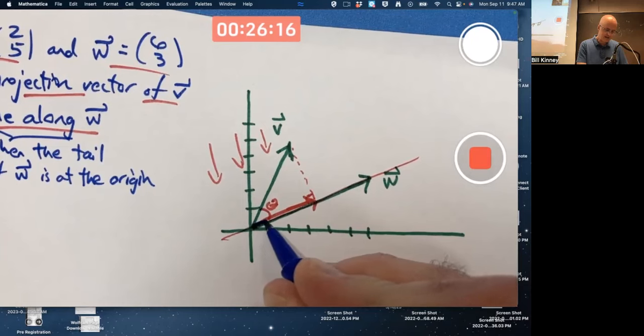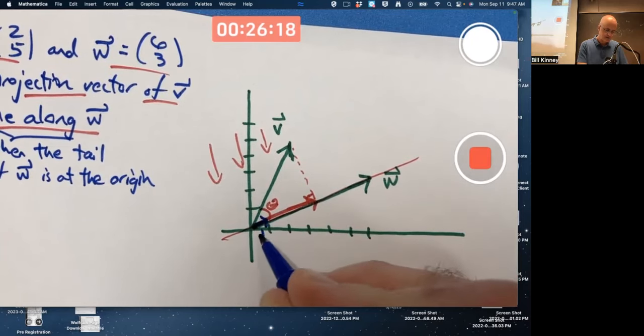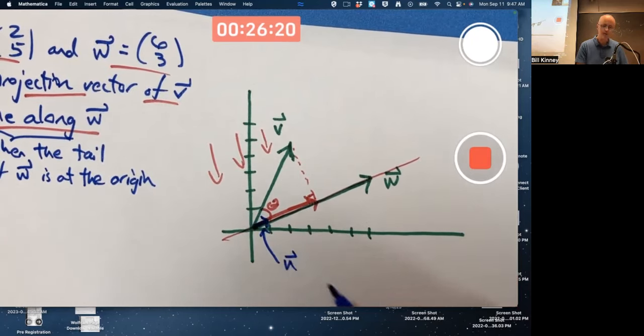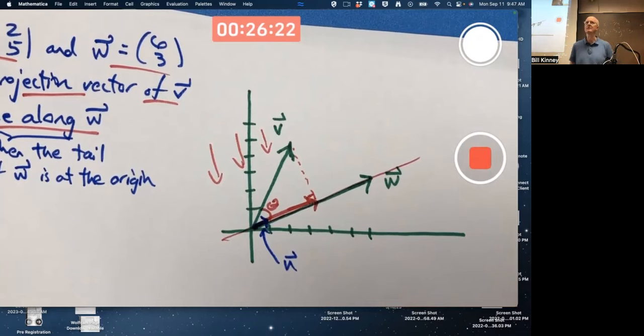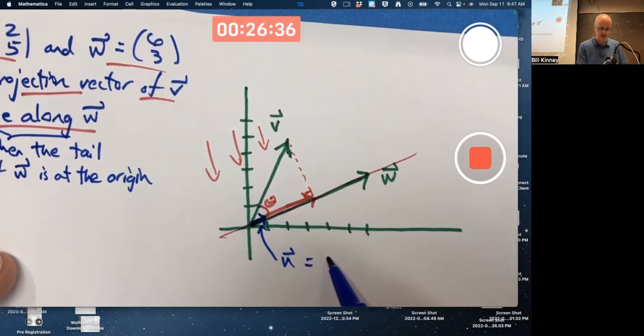To find another vector, call it U, parallel to W, and pointing in the same direction, and having unit length, length of 1. This can always be done as long as W is non-zero. What you do to find U is you take W itself and divide it by its length, its magnitude.